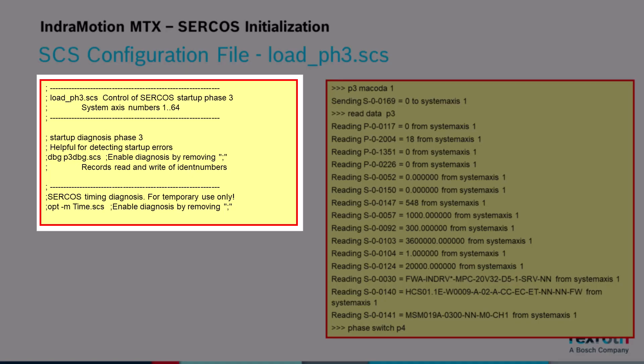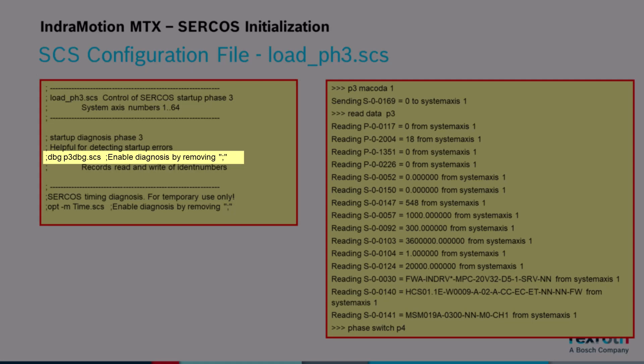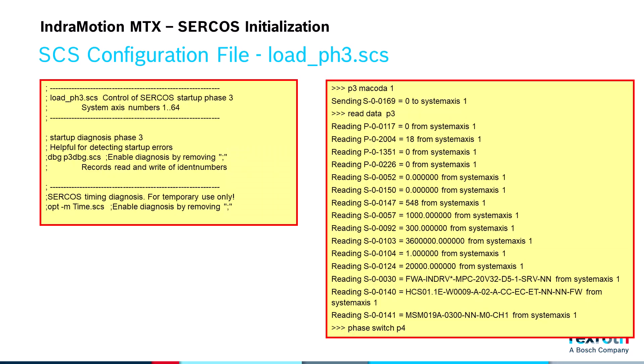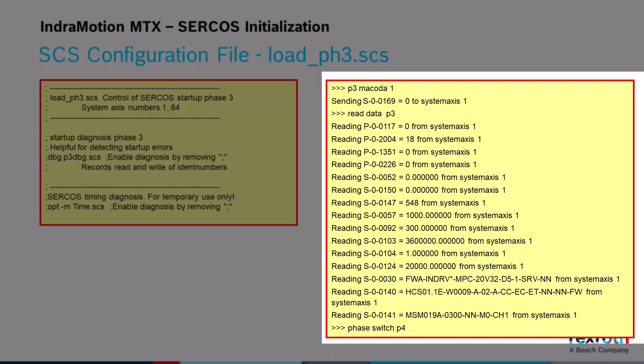This is the example file for load_ph3.scs that is provided in the control. It only consists of comments. It is possible to specify SCS files to be downloaded to the drives in this file, but we normally only use this configuration file to enable a diagnostic function for logging parameters. If you uncomment the line for the dbg command, then the control will log the parameters that are sent and read in phase 3. Here is an example of a log file — you can see which parameters are sent to the drive and which parameters are read from the drive.